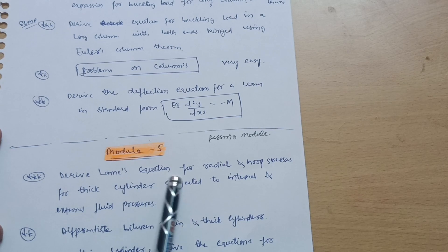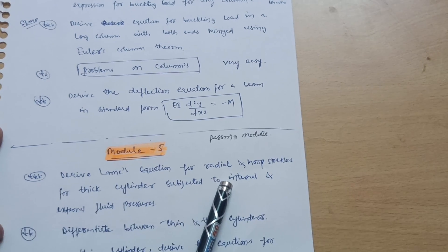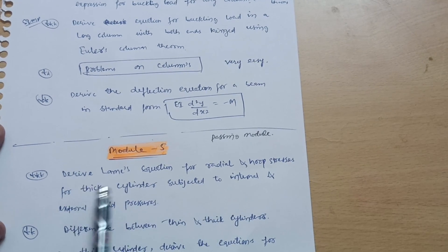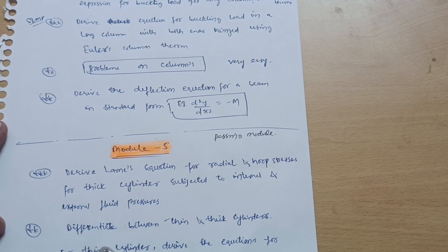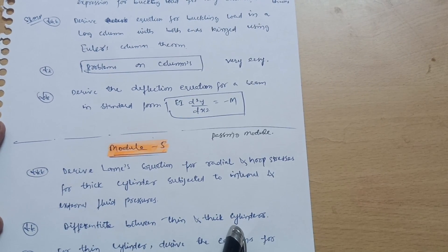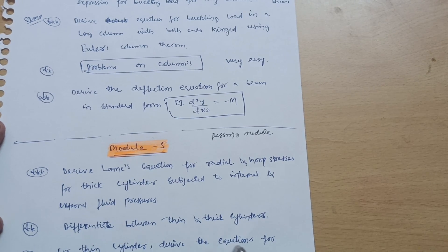Derive Lame's equation for radial and hoop stress for thick cylinder subjected to internal and external fluid pressure. Most important, this is a super important question. And differentiate between thin and thick cylinders. For thin cylinder, derive the equation for circumferential stress and longitudinal stress, again a super important one.